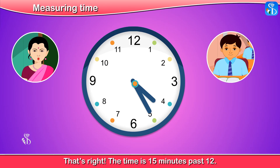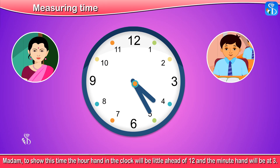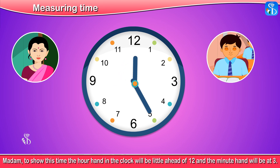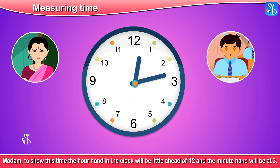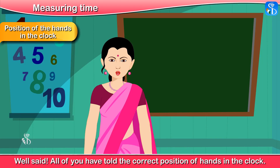The time is 15 minutes past 12. Madam, to show this time the hour hand in the clock will be a little ahead of 12 and the minute hand will be at 3. Well said. All of you have told the correct position of hands in the clock.